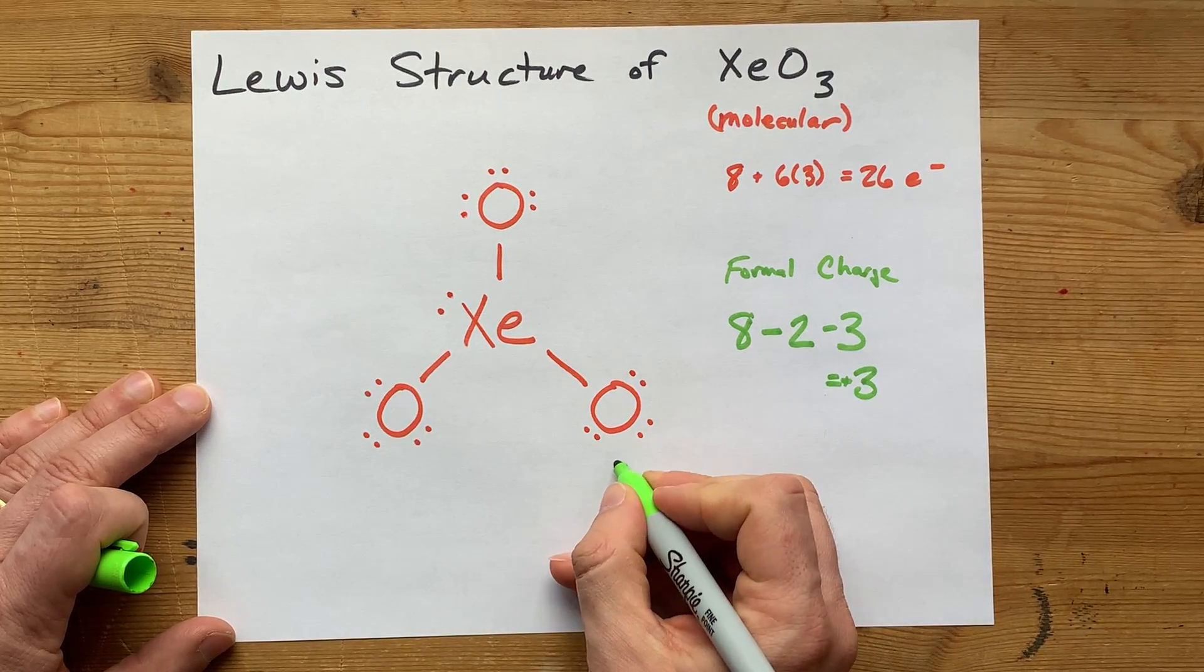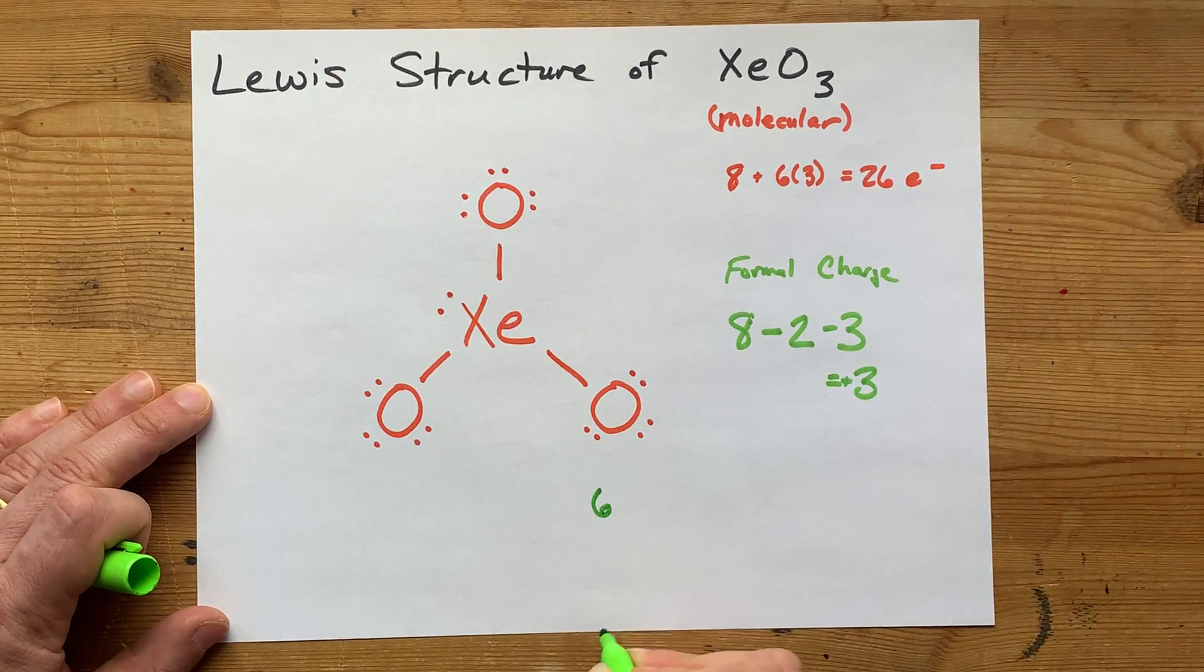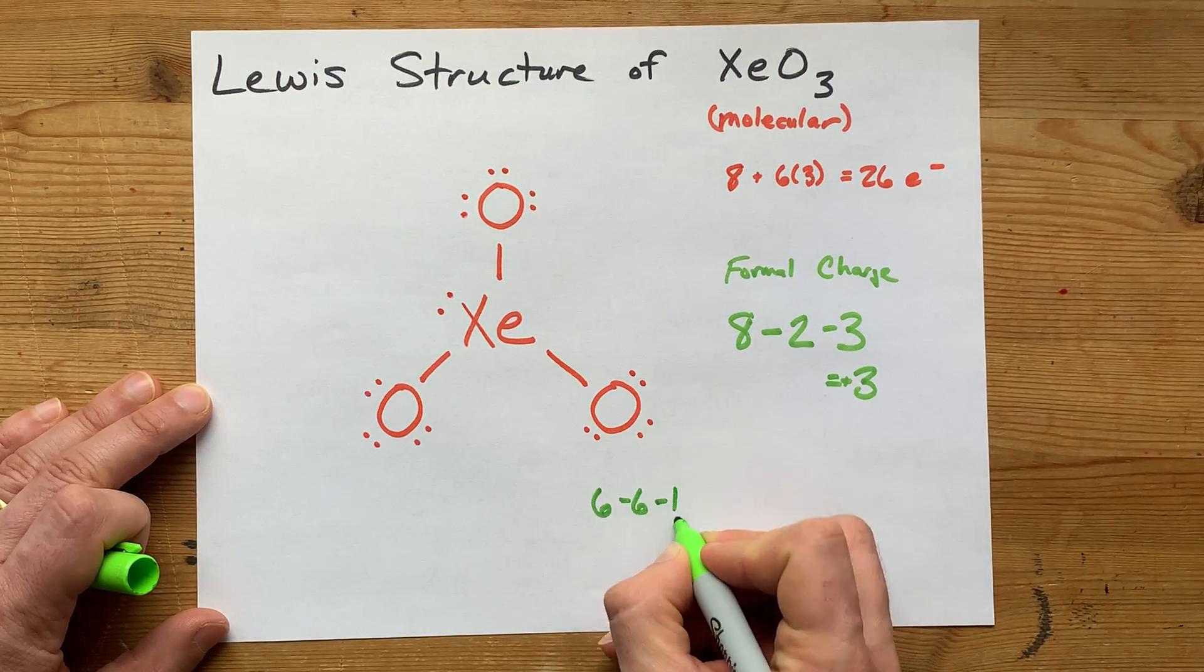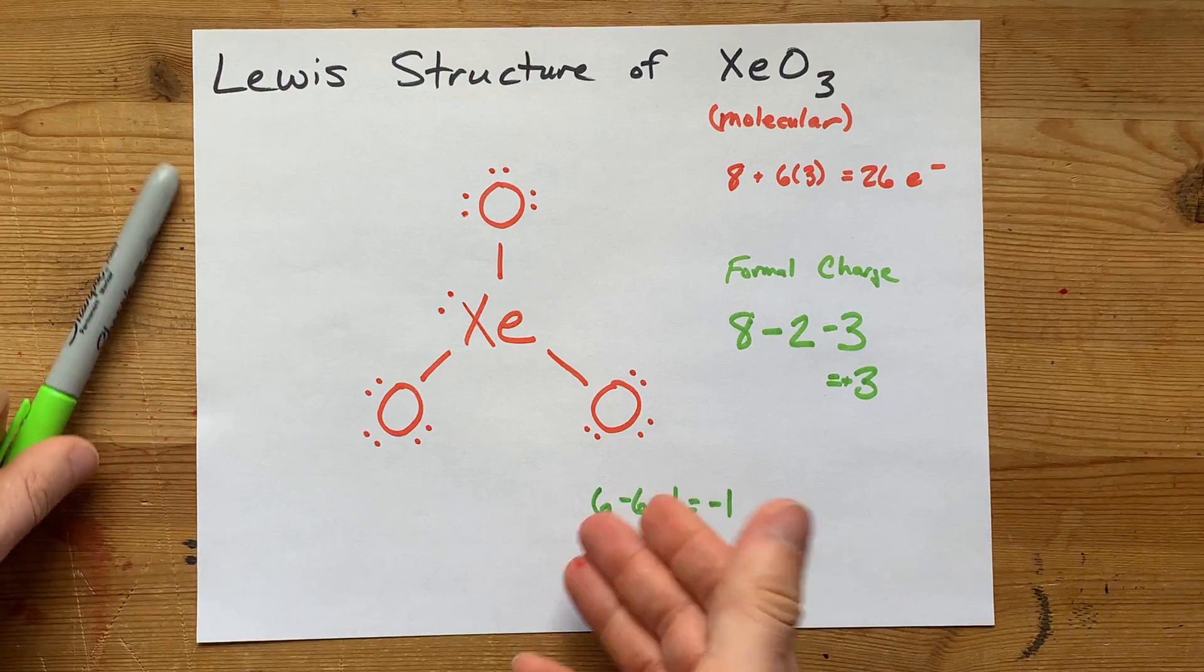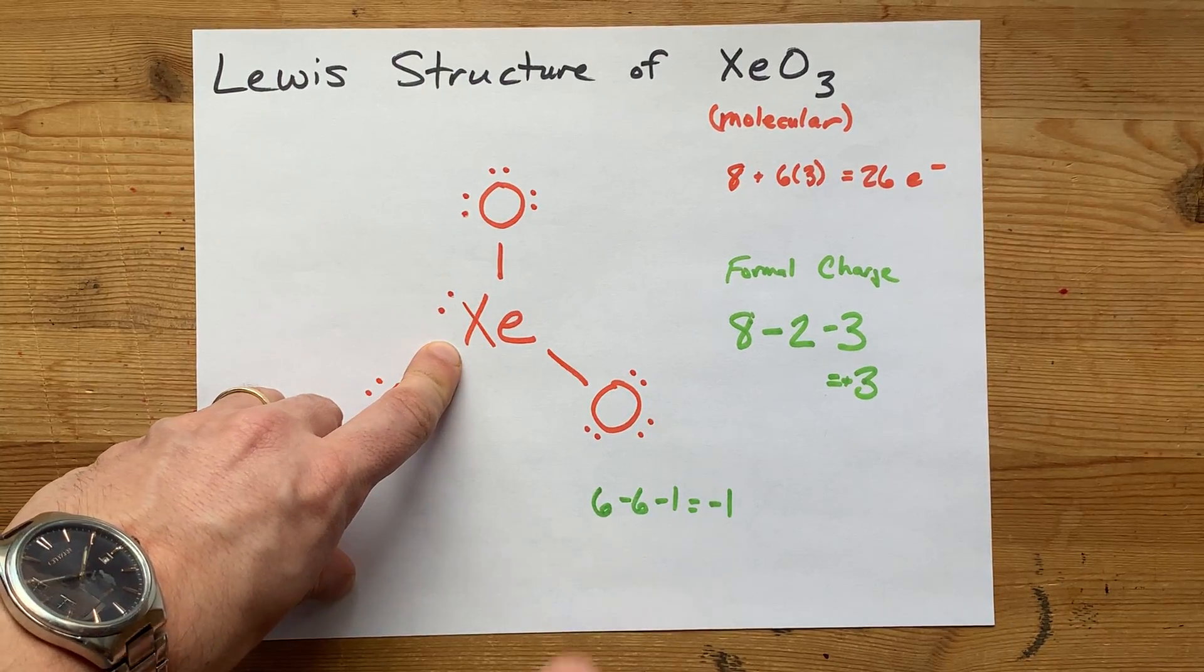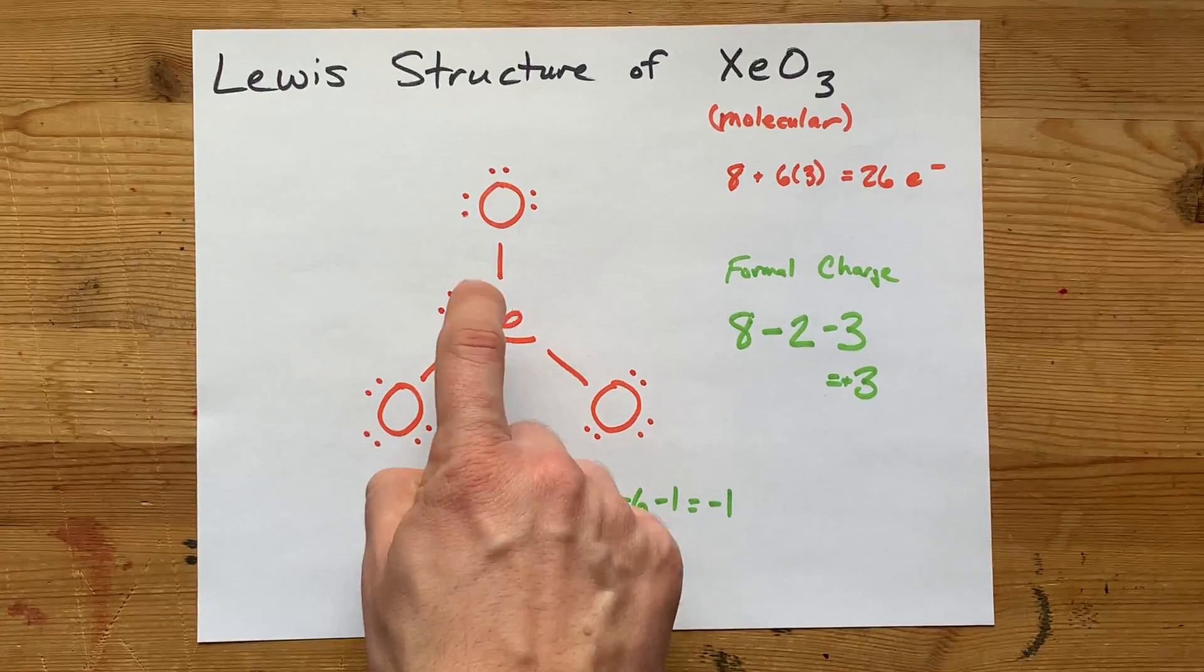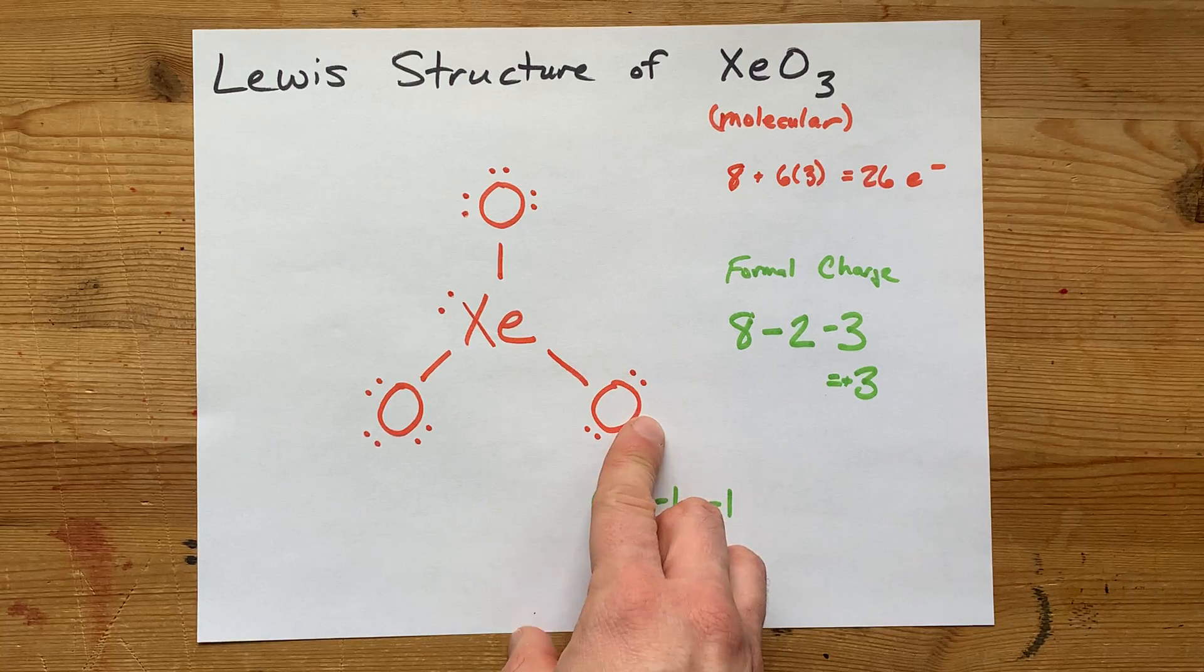Now, each oxygen, on the other hand, its formal charge is the number of electrons it brought, minus the number of dots, minus the number of lines. That's negative 1. One hint for when you should move electrons into double bonds is if you're connecting something with a positive formal charge with a negative formal charge. Here we've got positive 3, which is very attractive to a negatively charged oxygen.